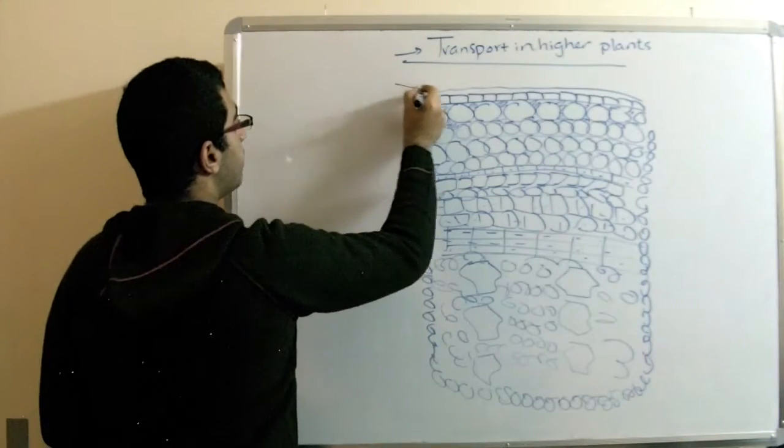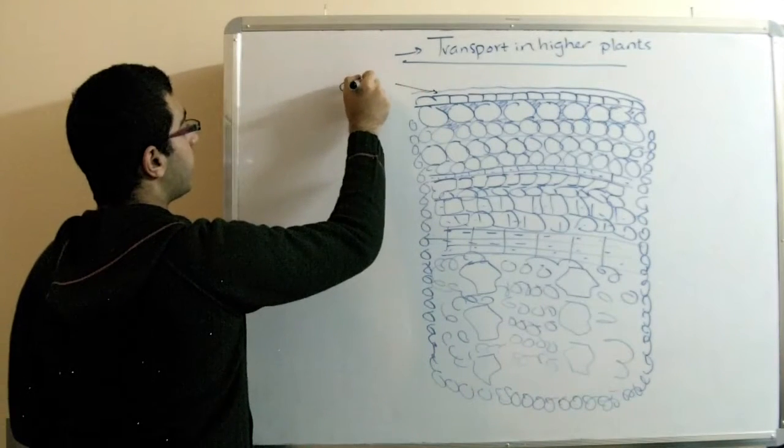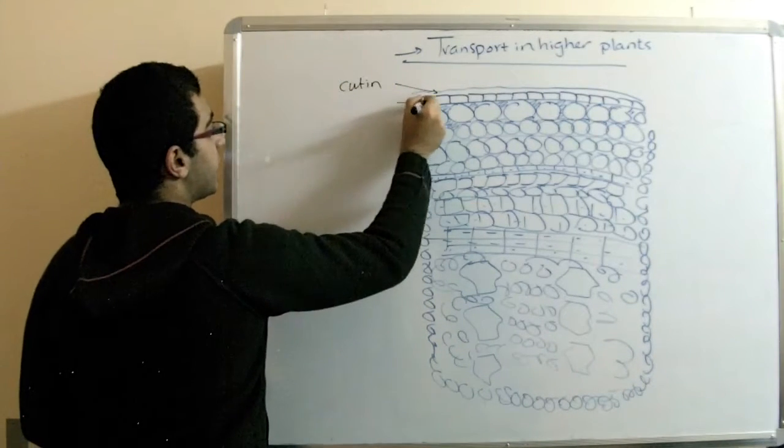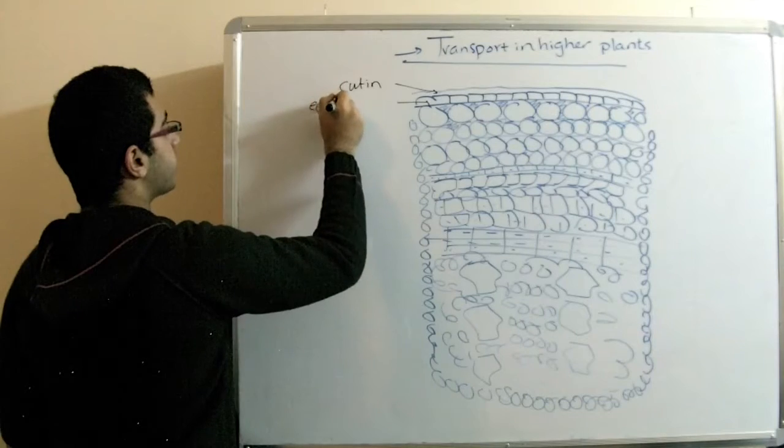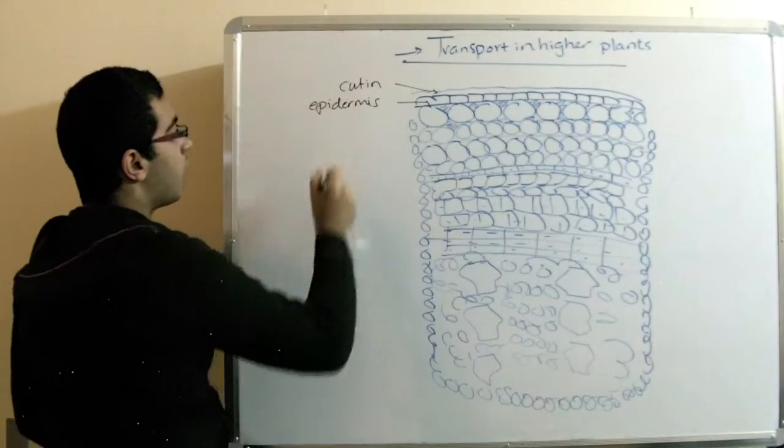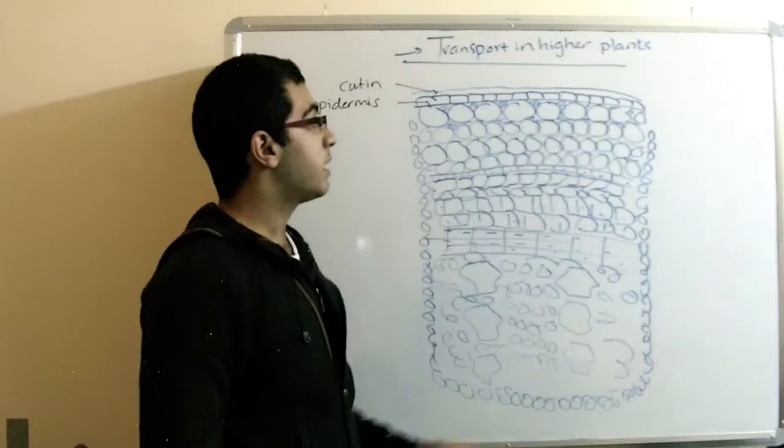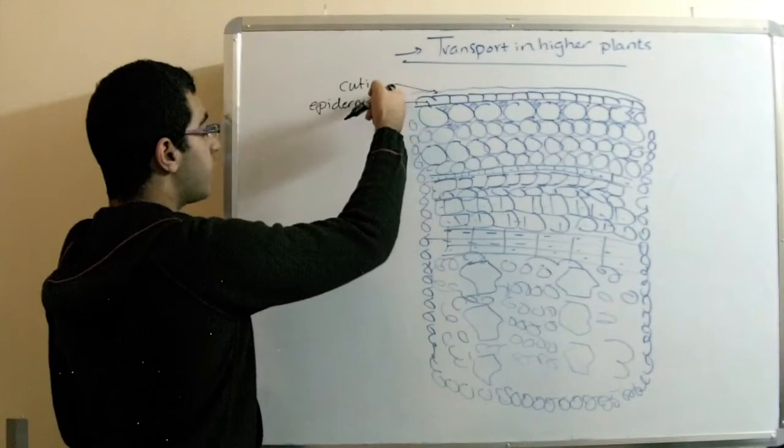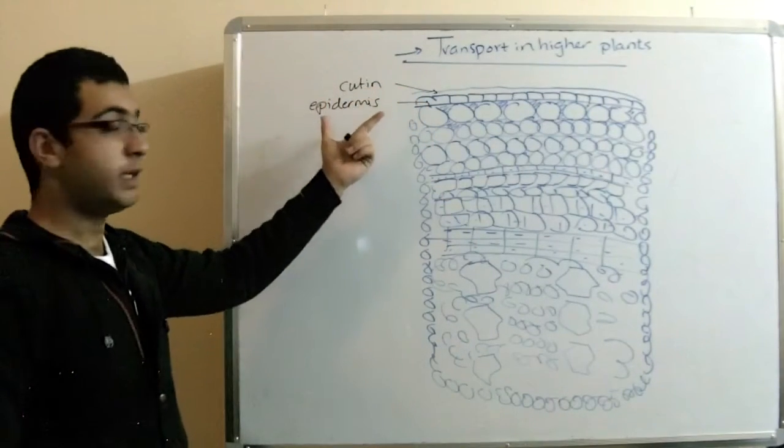So, the first thing is the cuticle layer. The second is the epidermis. And the epidermis is a row of adjacent bell shaped cells which are covered by a layer of cuticle or cutin.